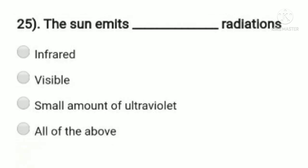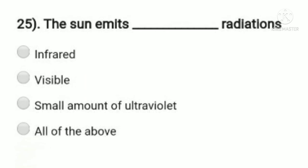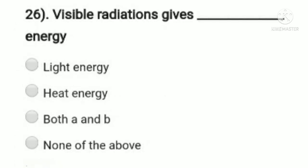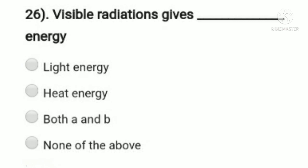Question 25: the sun emits dash radiations — option A: infrared, option B: visible, option C: small amount of ultraviolet, option D: all of the above. The sun emits infrared radiation, visible radiation, and a small amount of ultraviolet radiation. So option D, all of the above, is the right answer. Question 26: visible radiations give dash energy — option A: light energy, option B: heat, option C: both A and B, option D: none of the above. Visible radiations mainly give light energy, so option A, light energy, is the right answer.